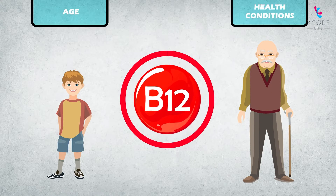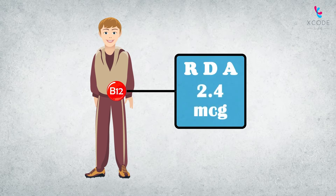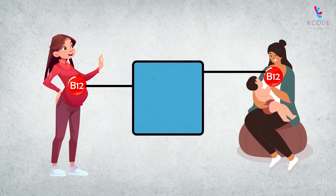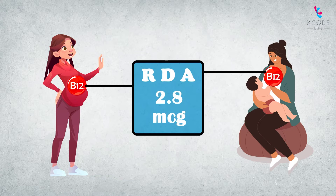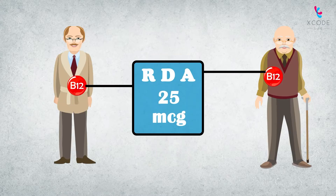The vitamin B12 requirements vary according to age and health conditions. An average healthy adult's recommended dietary allowance (RDA) of vitamin B12 is 2.4 micrograms. This requirement increases to 2.4 and 2.8 micrograms for pregnant and lactating women respectively. As you age, the absorption of several nutrients including vitamin B12 is reduced, and the RDA for elderly individuals varies from 25 to 100 micrograms.